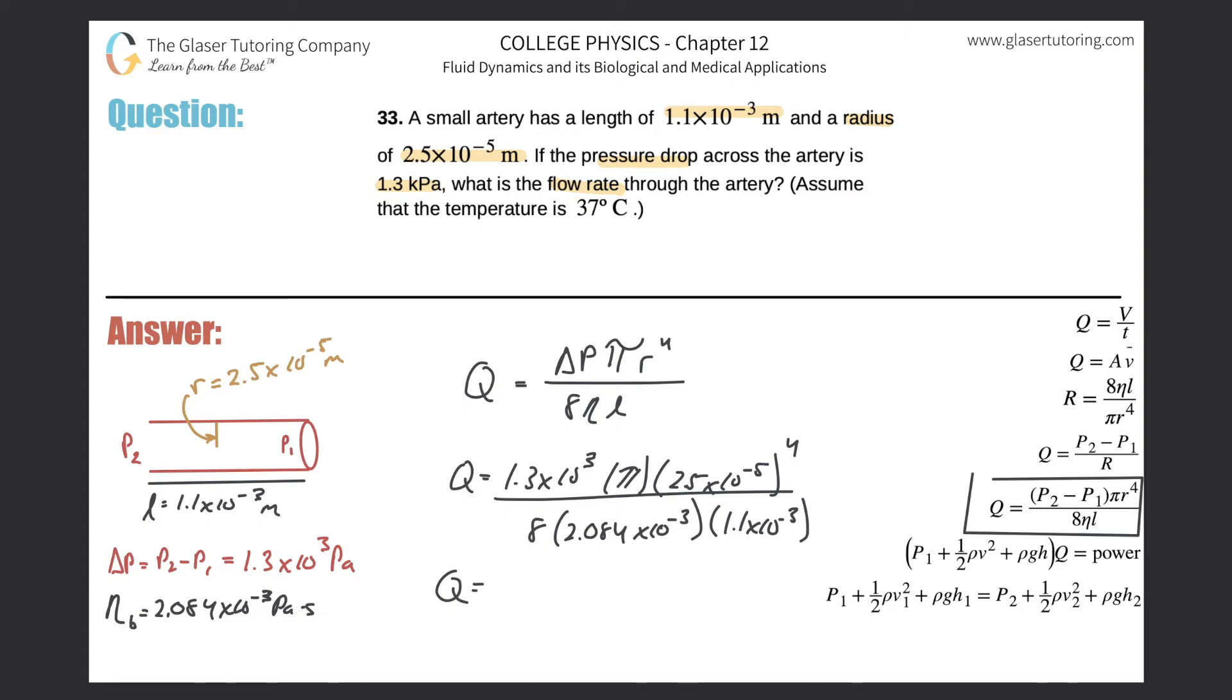And here we get a very small value. The flow rate is 8.7×10⁻¹¹ cubic meters per second. That is the answer.